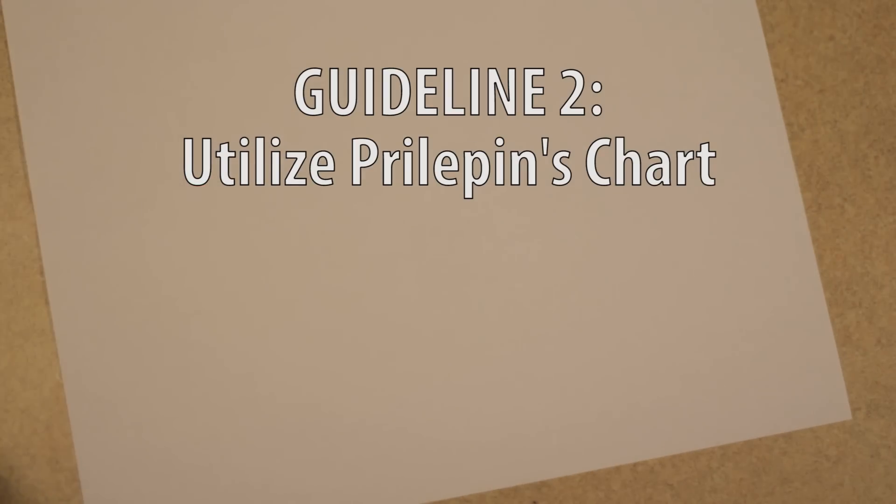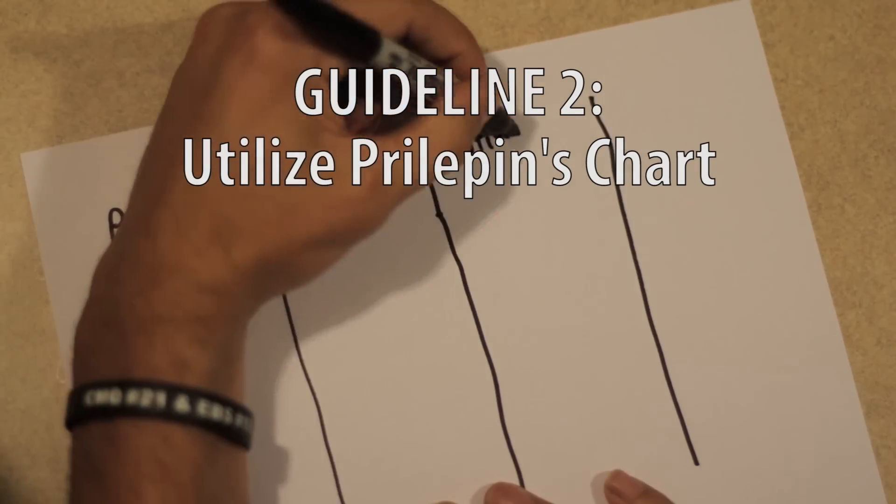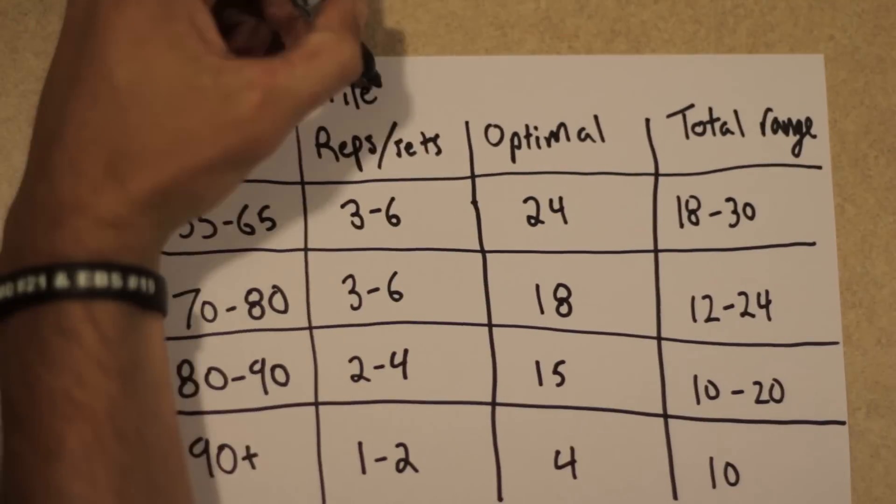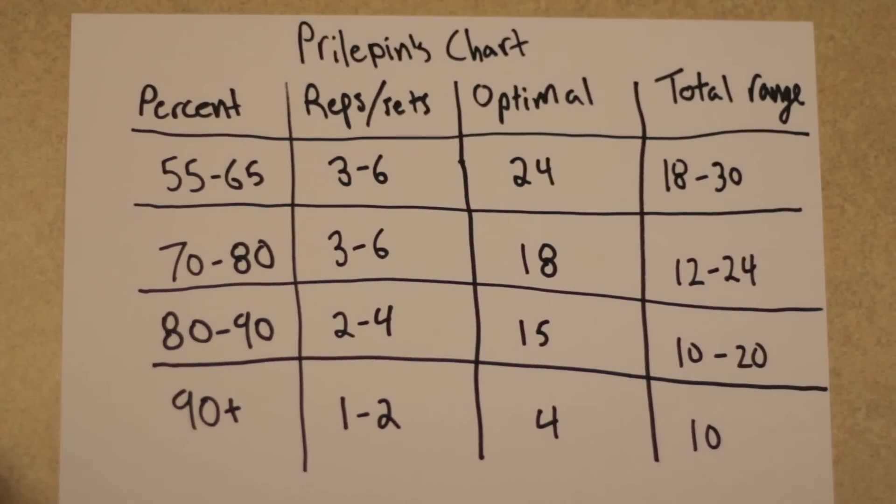The second guideline utilizes Prilipin's chart. It's a chart that was developed after many years of research on Soviet weightlifters. Essentially it breaks down the optimum number of sets and reps an athlete should perform at a given percent of their one rep max.